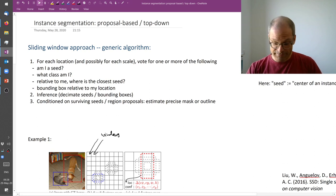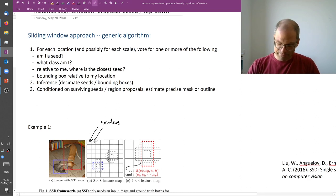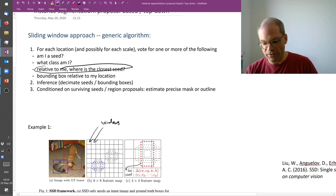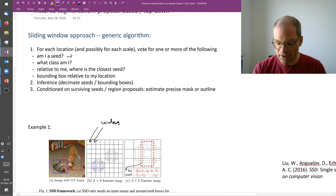Then we can also ask: if I were a seed what class would I be? A dog or a cat or potted plant? And to make things more fine-grained, because sometimes the cats and dogs will not sit precisely in the middle of one of your windows, you can also try and estimate an offset. So you can answer the question: relative to me, where is the closest seed?